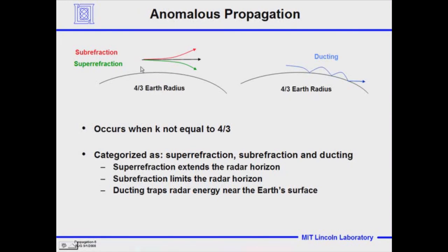With that four-thirds Earth propagation in a normal atmosphere, the radar beam propagates in a straight line. If we have less of a decrease in refractivity than the typical 40 parts per million per kilometer, we call that sub-refraction, which limits the radar horizon. If we have more than that, we call it super-refraction. And if it goes up to 160 parts per million per kilometer for the decrease in refractivity, we call that ducting. Ducting effectively has the radar beam trapped, following the Earth's horizon, limited only by attenuation of the beam.